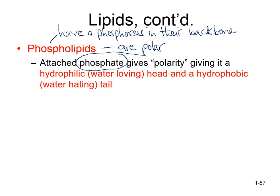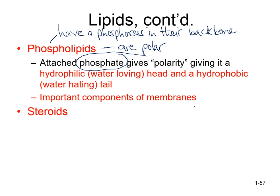Because of their phosphate, phospholipids are hydrophilic — water-loving. They have a hydrophilic head that is water-loving and a hydrophobic tail that is water-hating. So one part loves water and one part hates water. They are important parts of the cell membrane — part of the cell membrane is made of phospholipids.